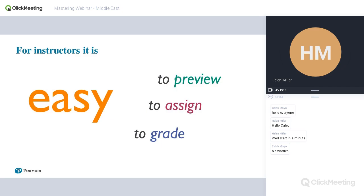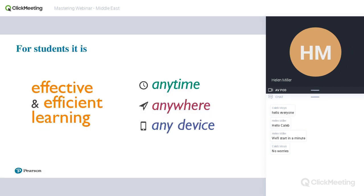It's really easy in Mastering to preview content, assign that content to your students, and have it automatically graded, so you don't have to worry about paper marking or getting feedback back to individual students. For students it's a really effective and efficient way of learning — we have plenty of case studies and evidence of Mastering's effectiveness in helping students master key concepts and develop skills. It allows them to interact and learn course content anytime, anywhere, and on any device, making learning on your course really accessible.